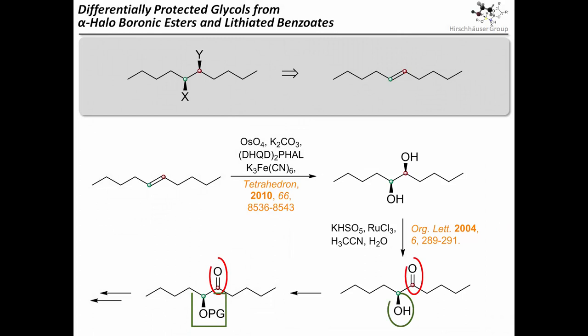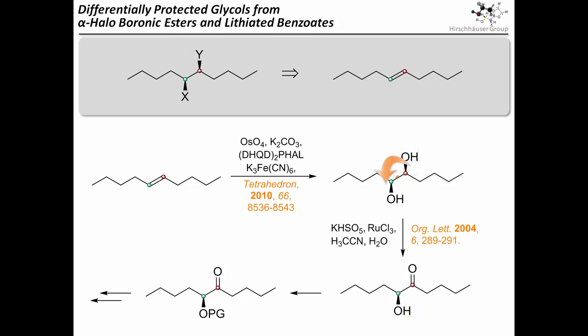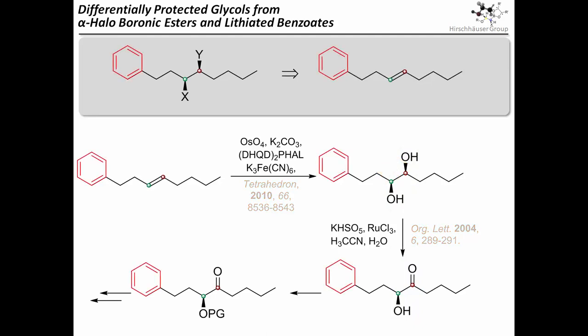Now you have two easily distinguishable functional groups, as well as a good handle for controlling the adjacent stereocenter. However, this only works since there is no need to distinguish between the two hydroxyl groups during the oxidation, which is due to the C2 symmetry of our diol. As soon as you introduce some kind of difference in the two alkyl chains, you are facing a regioselectivity problem.